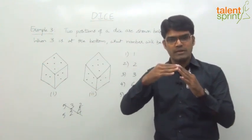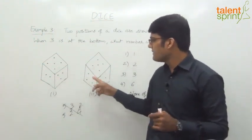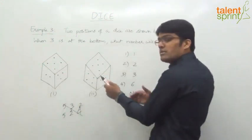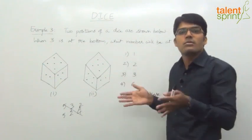There is no other common face, right? Two are already common. 5 and 2 are connected. Here, 5 and 2 is connected to 3. On the other side, 5 and 2 is connected to 4. So, it is obvious that 3 and 4 are opposite.